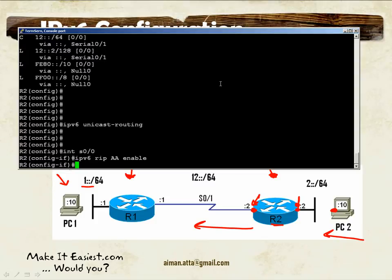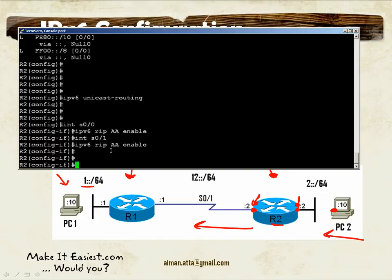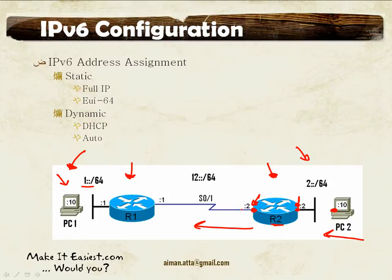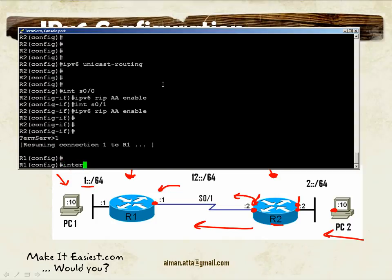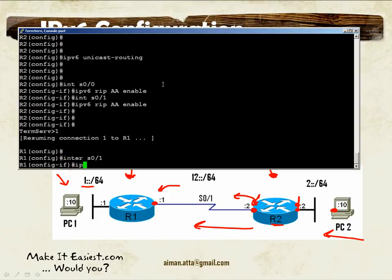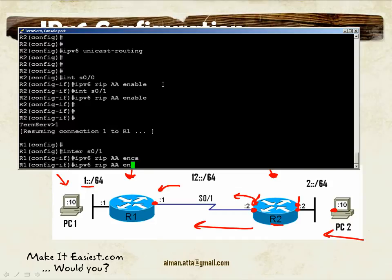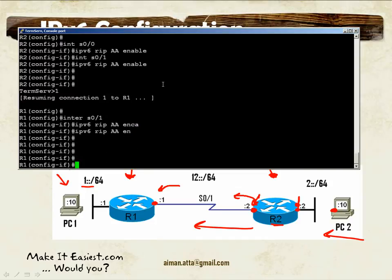The process name is 'AA'. We enabled RIP on interface Serial 0.0 and we'll do the same on Serial 0.1. Now RIP is running and should be sending messages. Router 1 should receive these messages. We need to enable RIP on router 1's interface Serial 0.1 as well, so that it exchanges RIP messages with router 2. I'll go to router 1 and say: interface Serial 0.1, IPv6 RIP AA enable — it must be the same process name.